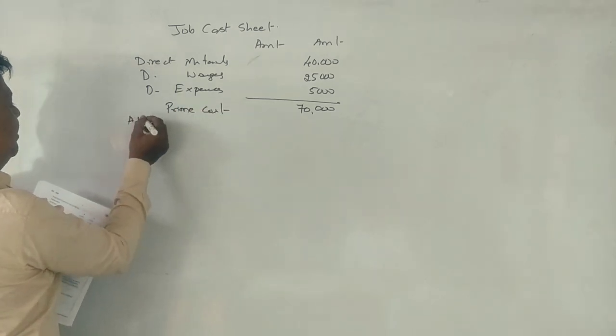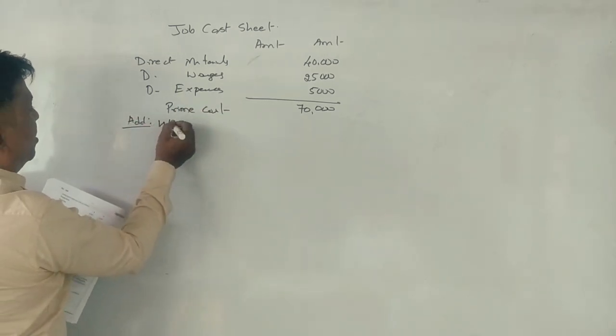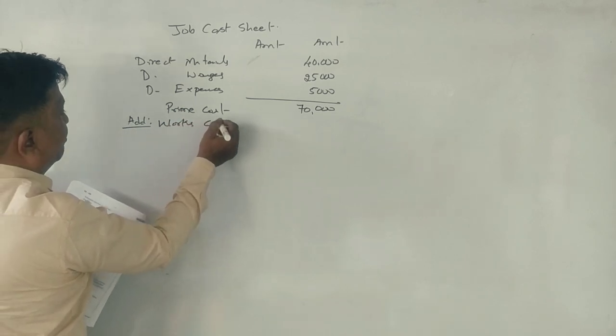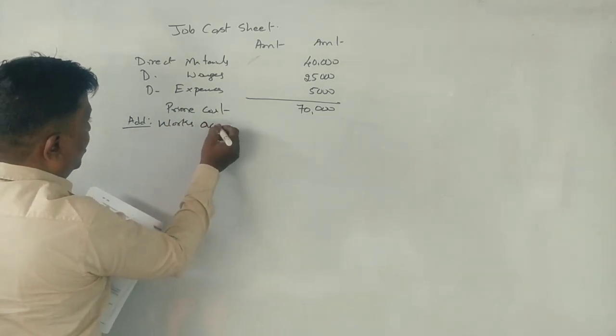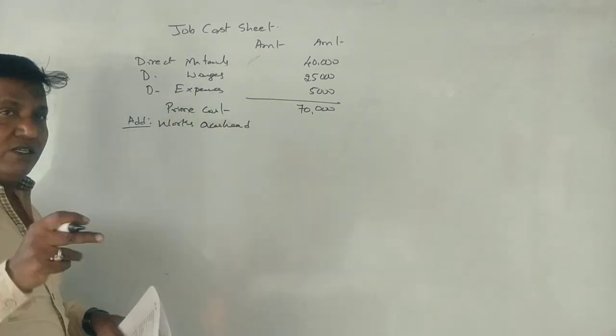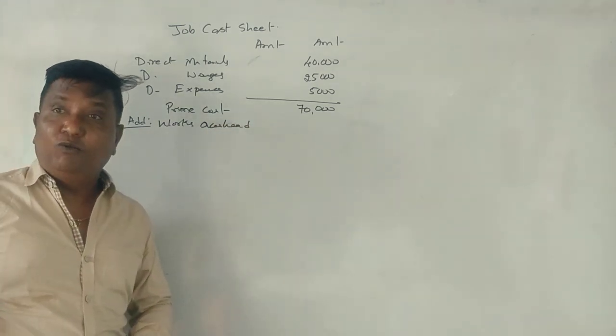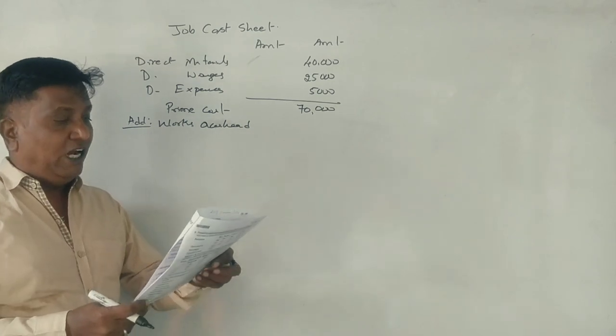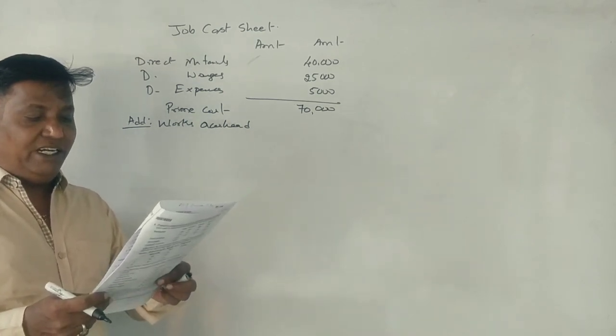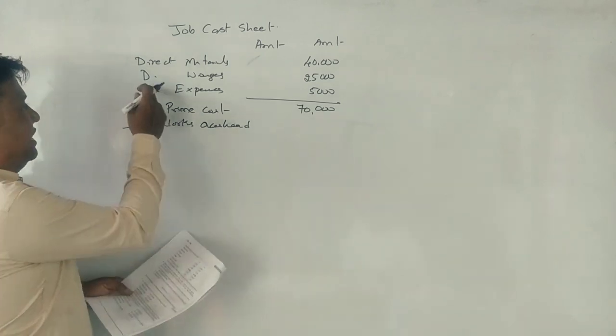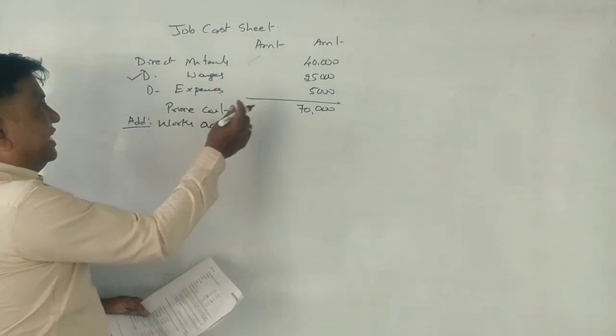What is it? Works cost, factory works on cost, works overhead. And then, provide 60% of productive wages. Productive wages, direct wages, is it? 25,000, direct wages.